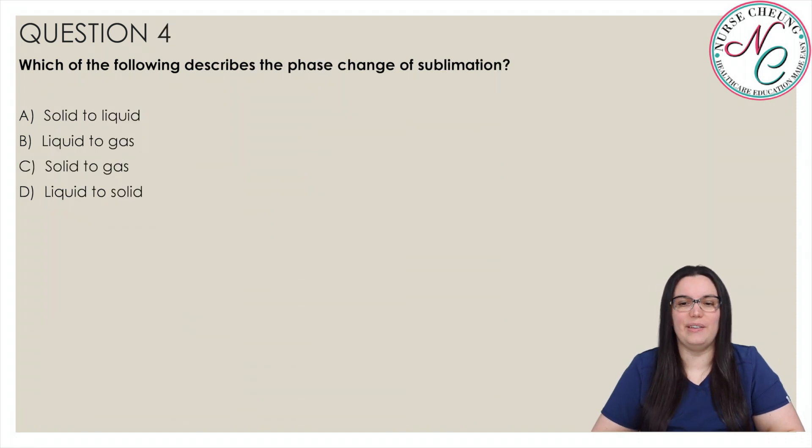Which of the following describes the phase change in sublimation? Is it A solid to liquid, B liquid to gas, C solid to gas, or D liquid to solid? And the correct answer is C solid to gas. Sublimation is the process in which a solid skips the liquid state and becomes a gas immediately. This somewhat rare phase change is seen in special compounds like dry ice, which goes from a solid to a steam at room temperature.